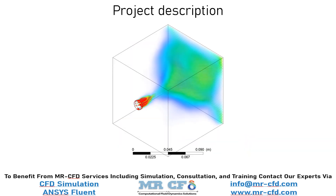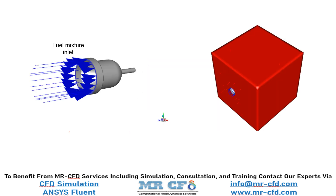In this project, a three-phase flow fuel injector has been simulated by ANSYS Fluent software. The standard k-epsilon model is used for flow analysis. The mixture multi-phase model for three phases — air, liquid, and vapor — has been used to investigate the phase interaction. The liquid enters the computational domain through the injector with a velocity of 20 meters per second, and a jet flow is formed inside the computational domain.